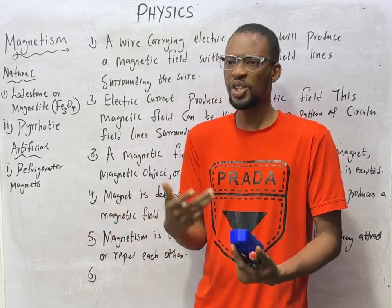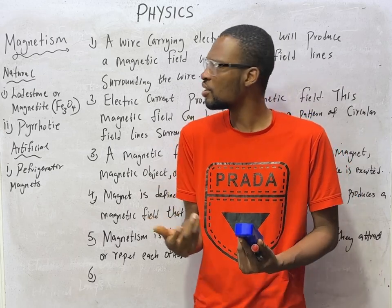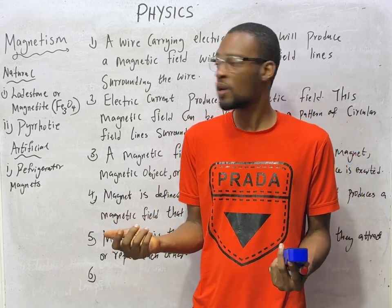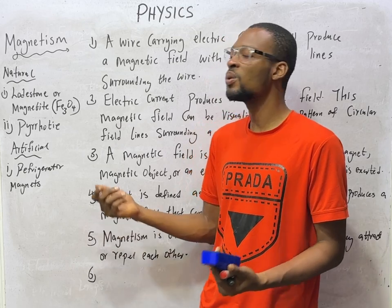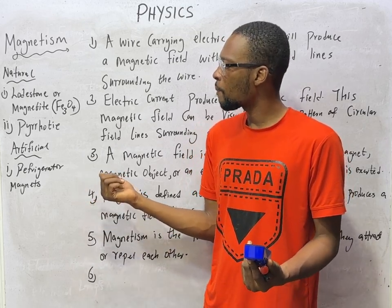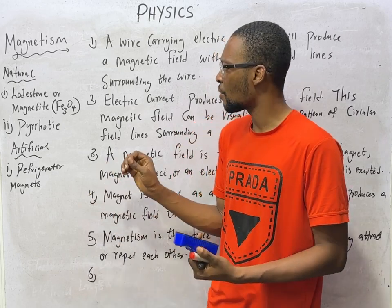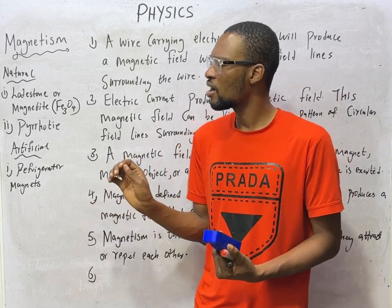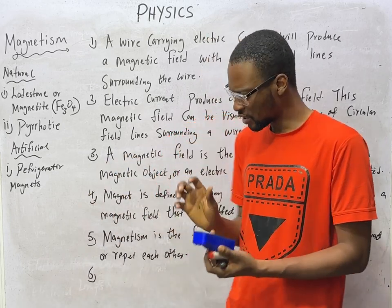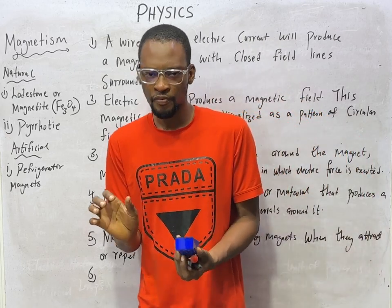Magnets can be natural or artificial. Natural magnets exist or occur in nature. Examples are magnetite, also called lodestone, and pyrrhotite. So magnetite and pyrrhotite are examples of natural magnets.